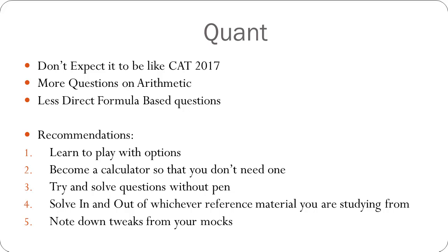Second recommendation: become a calculator so that you don't need one. We all know that CAT provides a calculator, but it's not a friendly one — you take a lot of time typing in those numbers. So put in some time and make your calculations really fast by looking at some speed math techniques. That would help a lot in terms of saving time. If you've practiced quant questions, you might notice that around 50% of your time is taken just calculating stuff. If you can reduce that to 20 or even 15 minutes, that would save a significant amount of time.